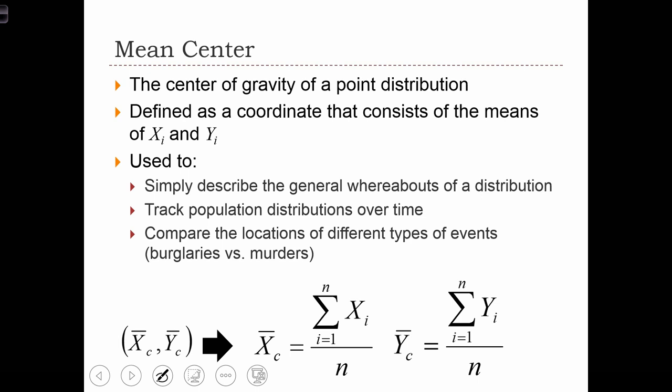The formula for the mean center is very similar to that of just an aspatial mean, except in this case, the mean center itself is a couplet of points. The first thing in this pair is just the mean of the x variable, the mean of the x-coordinate.